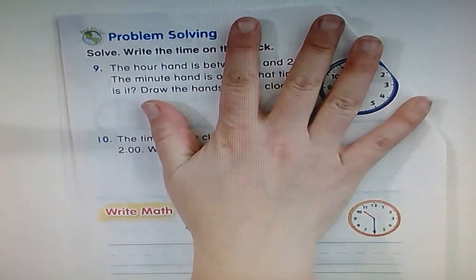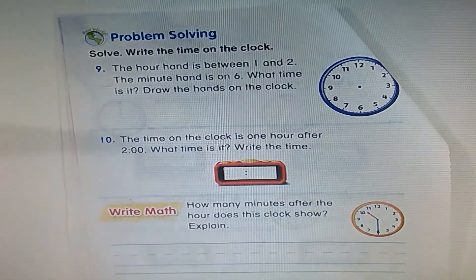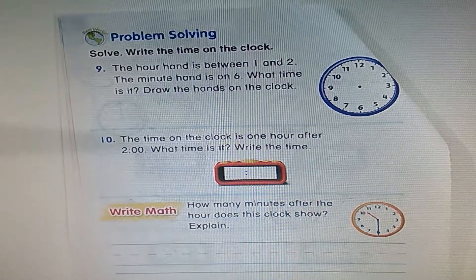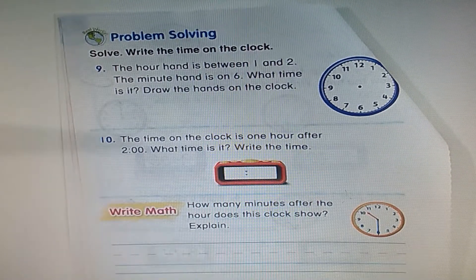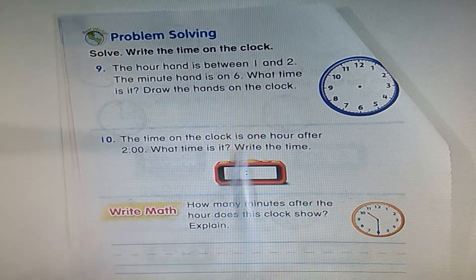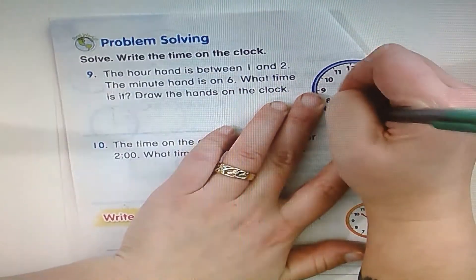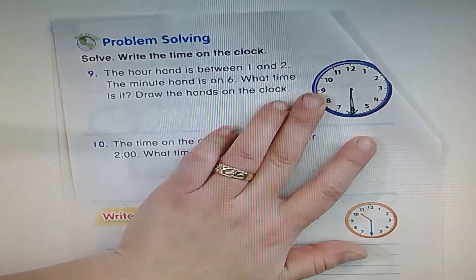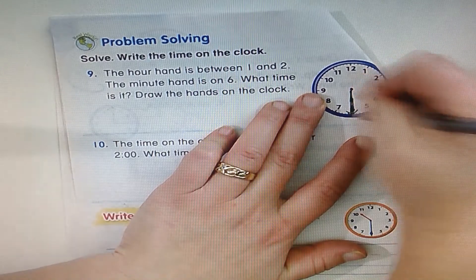Problem solving. Solve and write the time on the clock. The hour hand is between one and two. The minute hand is on six. What time is it? It just told us to draw the minute hand on the six, and I know that that means 30. Mine got sloppy again, I'm sorry. 30.